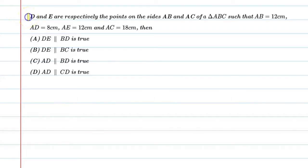Hello students, let's solve this question. D and E are respectively the points on the side AB and AC of a triangle ABC, such that AB is equal to 12 cm and AD is equal to 8 cm, AE is equal to 12 cm and AC is equal to 18 cm.